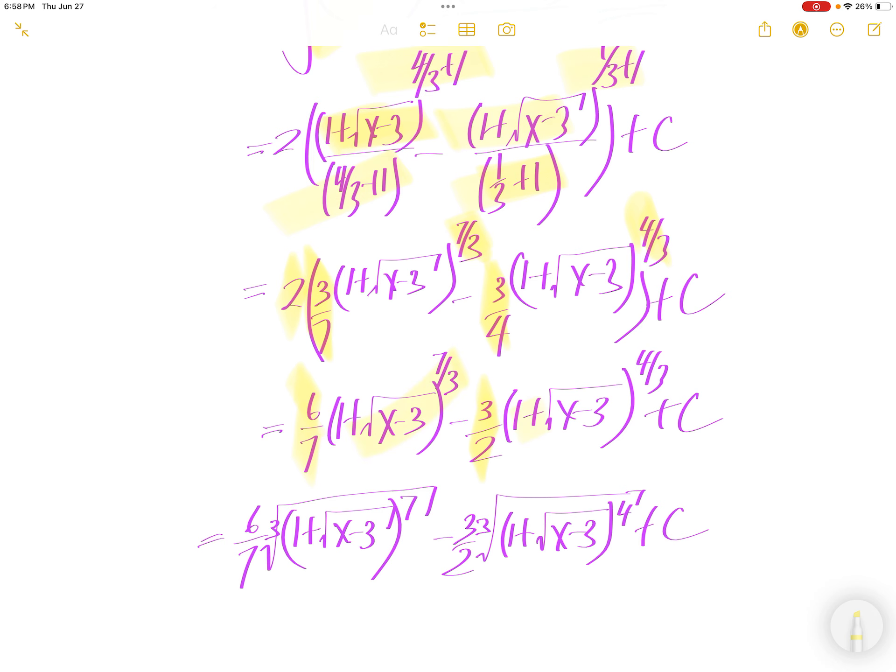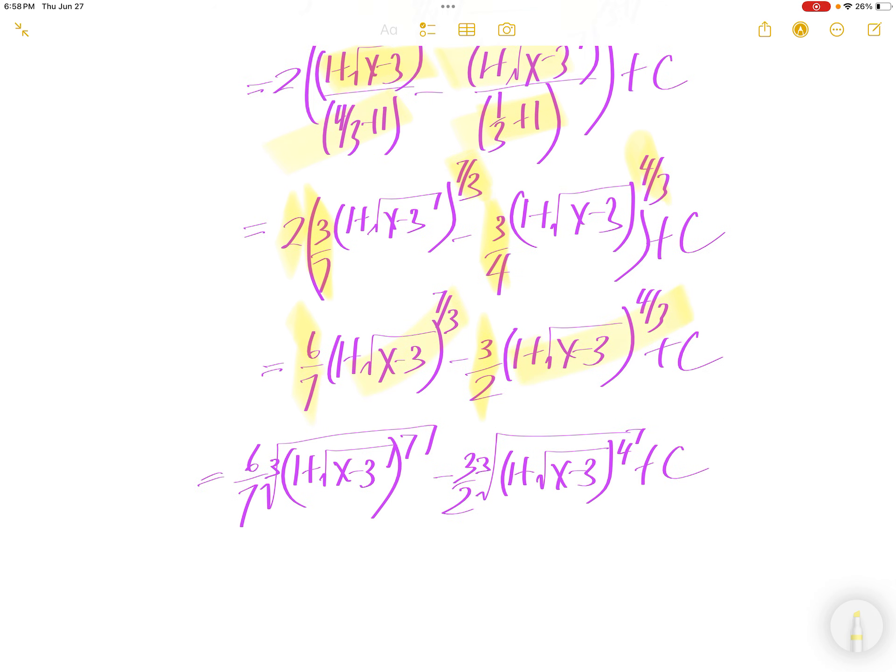And then, this piece is the same. Now, rewrite this as cube root of 1 plus square root x minus 3 to the power of 7, and this as cube root 1 plus square root x minus 3 to the power of 4. Done!